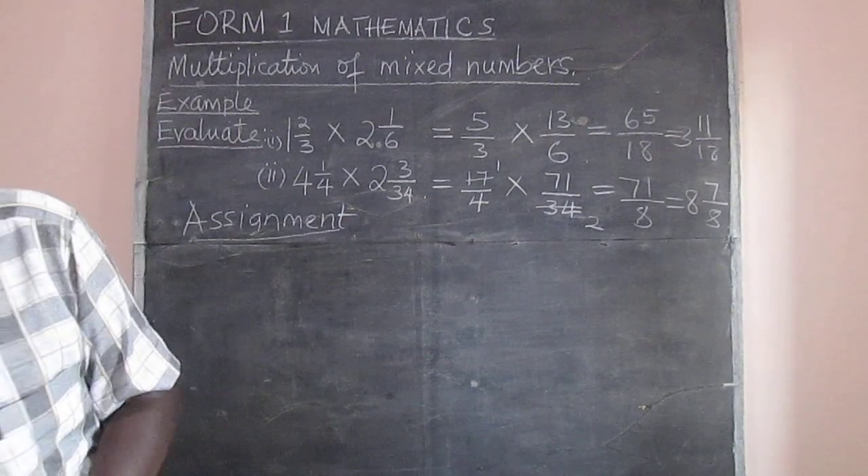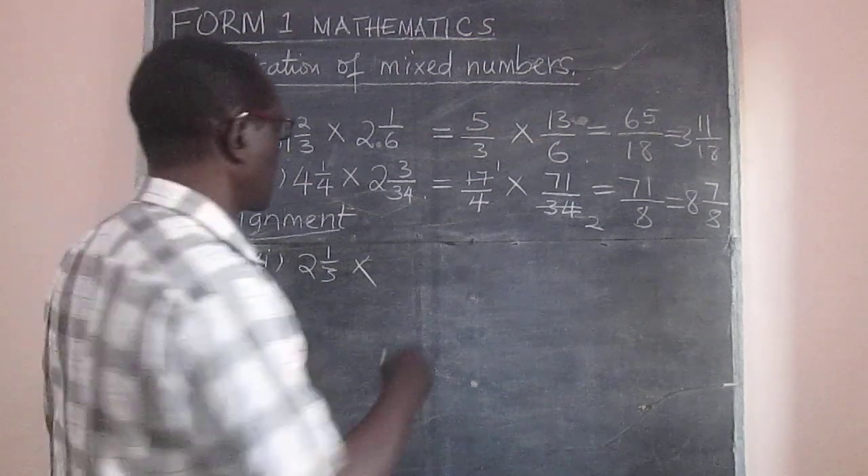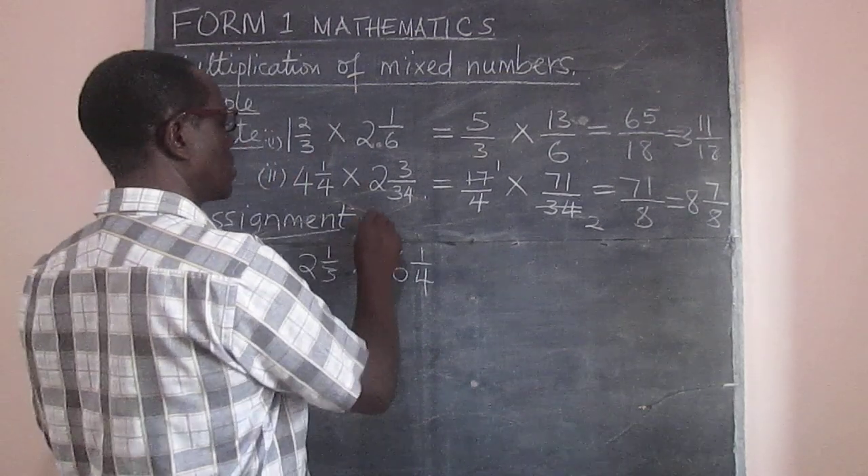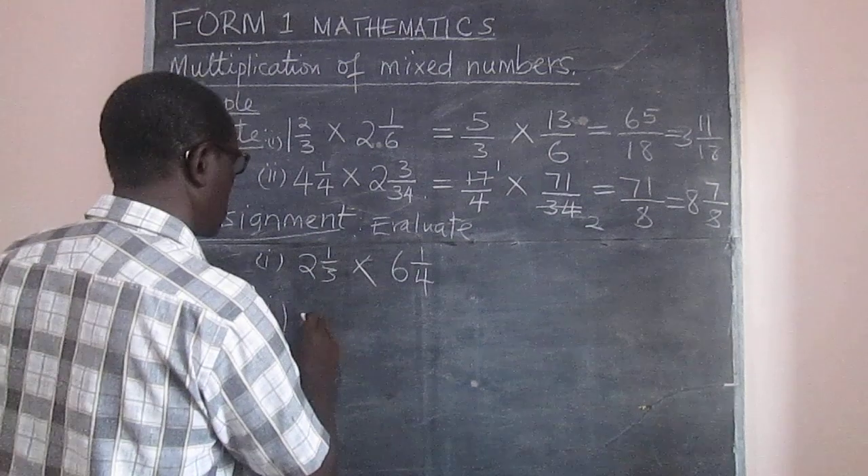And we have two and a third multiplied by six and a quarter. We are required to evaluate. We have here...